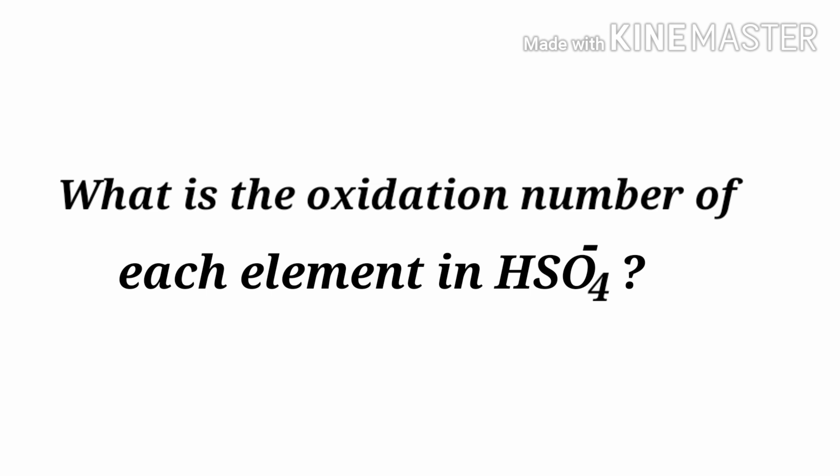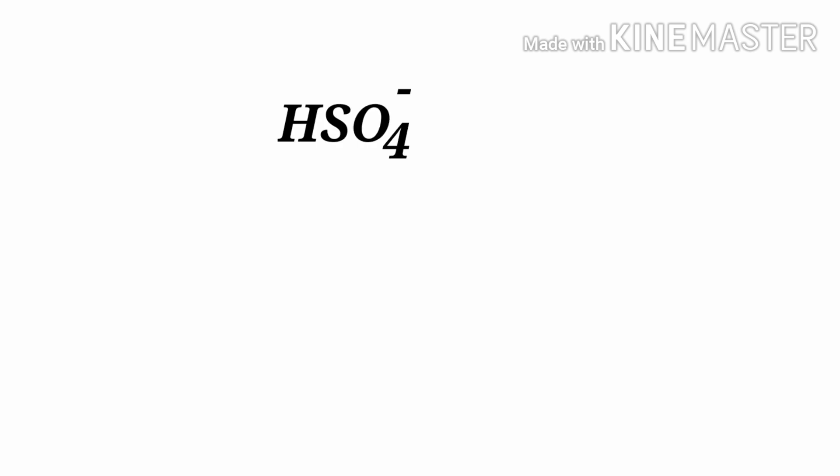What is the oxidation number of each element in hydrogen sulfate ion? We can use the oxidation number rules to determine oxidation numbers. Hydrogen sulfate is a polyatomic ion with overall oxidation number minus one.